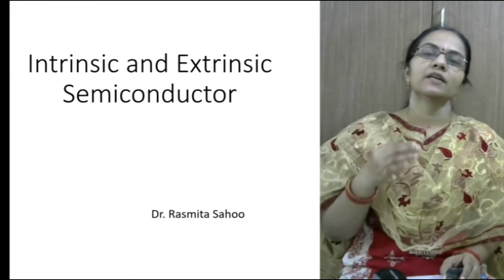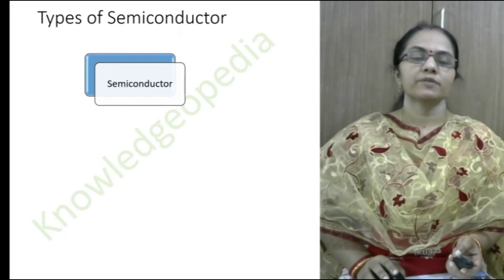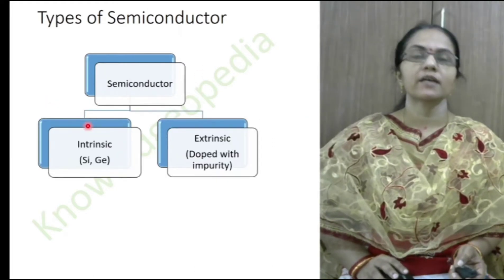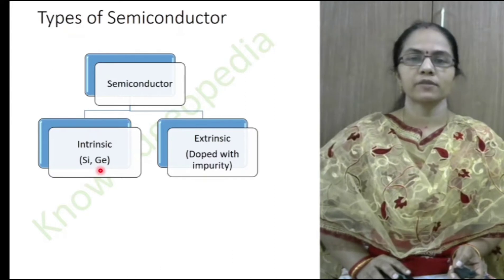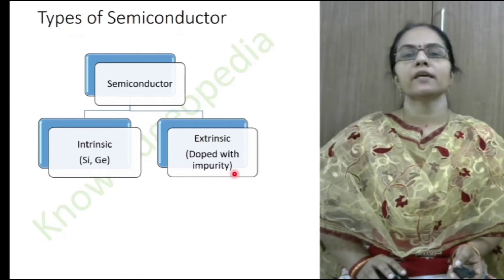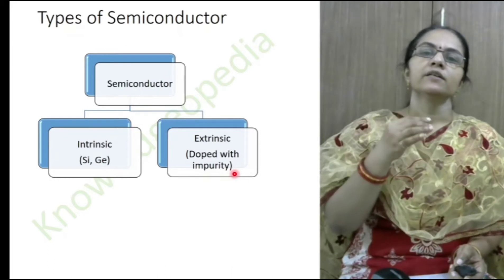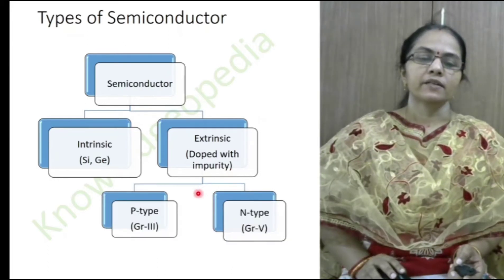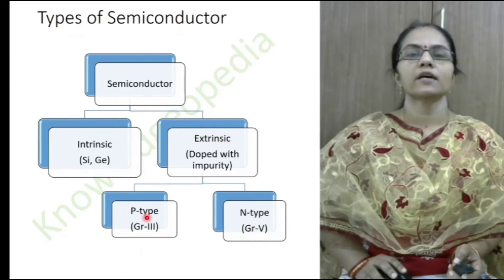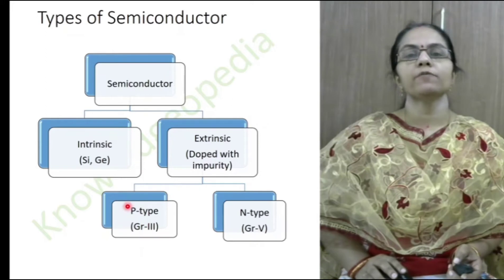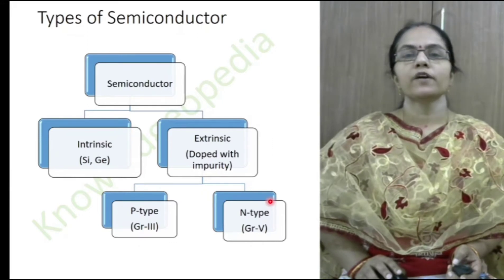Today we will be discussing intrinsic and extrinsic semiconductors in more detail. Intrinsic semiconductors include silicon and germanium crystals. Extrinsic semiconductors are pure silicon or germanium doped with either group 3 or group 5 elements. Depending on the dopant, extrinsic semiconductors are of two types: p-type, doped with group 3 elements, and n-type, doped with group 5 elements.